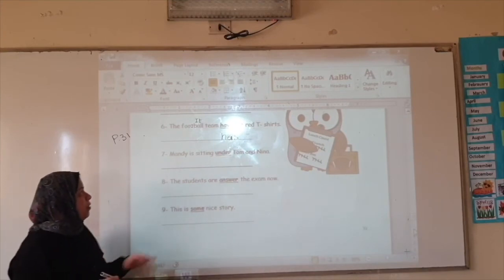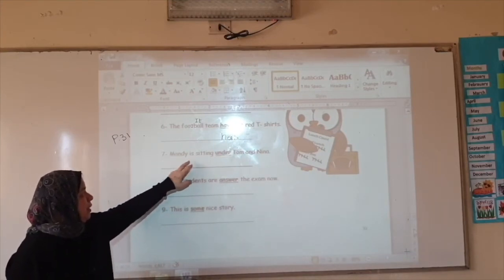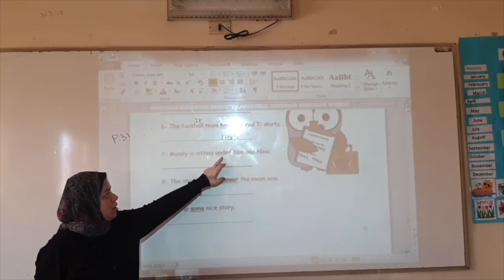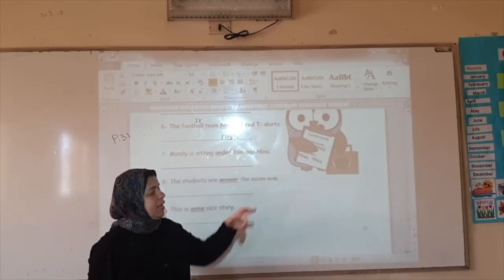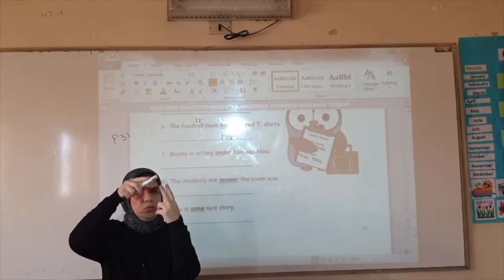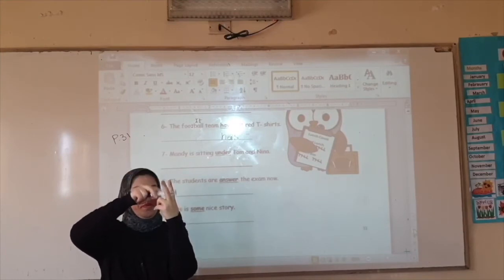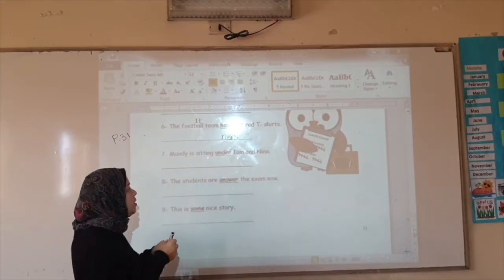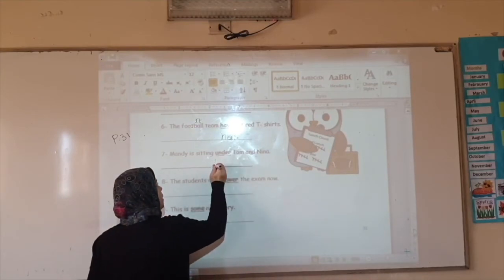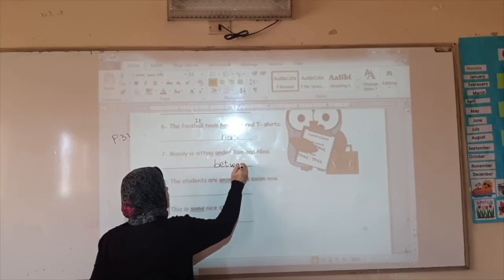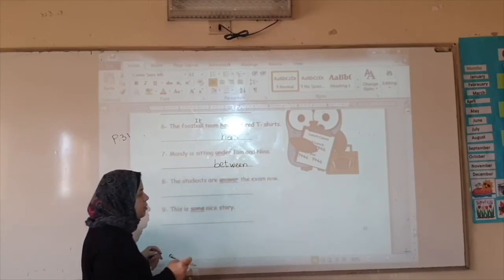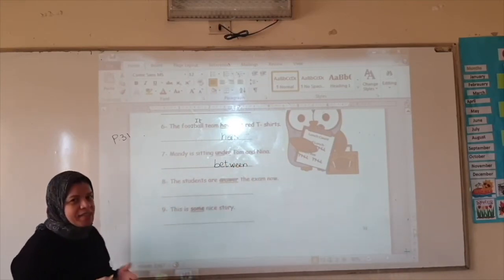Number seven. Mandy is sitting under Tom and Nina. Under, when we have two names, we put what? Between. Very good. How can we sit under them?